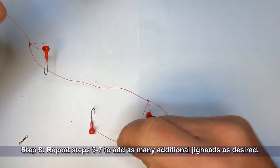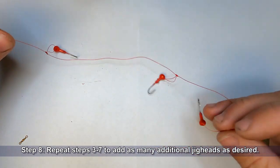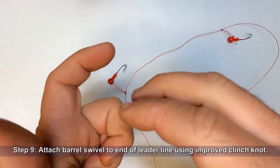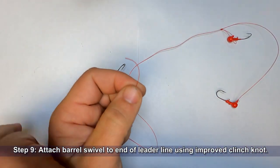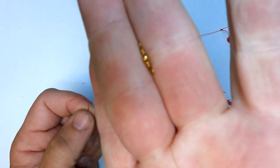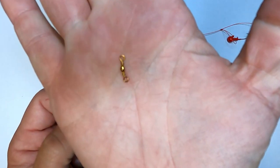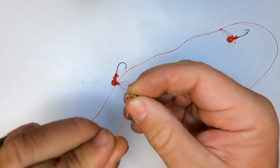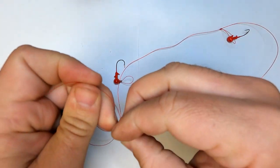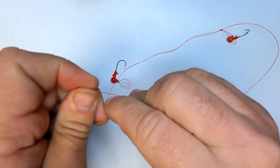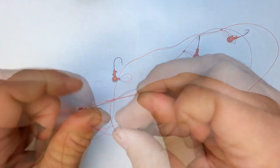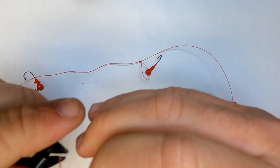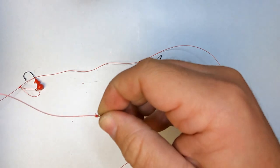And now what you have is a series of three jig heads all tied to this 17 pound mainline. The last step that we have to do here. There's the end of our line. I'm going to take this little bitty barrel swivel here and I'm going to tie that barrel swivel onto our line using an improved clinch knot. Pull, snug it up, and trim the tag.